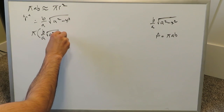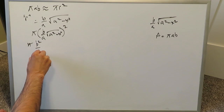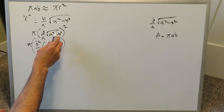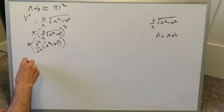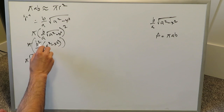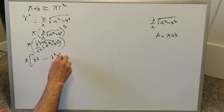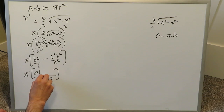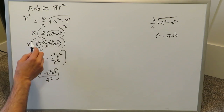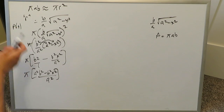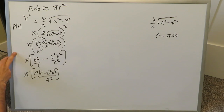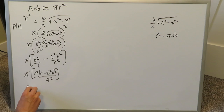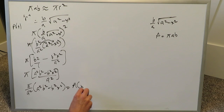Expanding pi · (b/a)² · (a² − x²), you get pi*b²/a² · (a² − x²). Opening the parentheses and taking the common denominator a², you get (pi/a²)(a²b² − b²x²). This is our cross-sectional area slice, which we'll now integrate — treating it as a circular cross-sectional slice even though it's actually an ellipse.